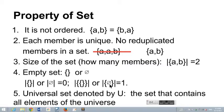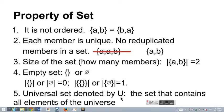Finally, the universal set is denoted by U (capital U). This is the set that contains all elements of the universe. That concludes part 1 of basic set theory.